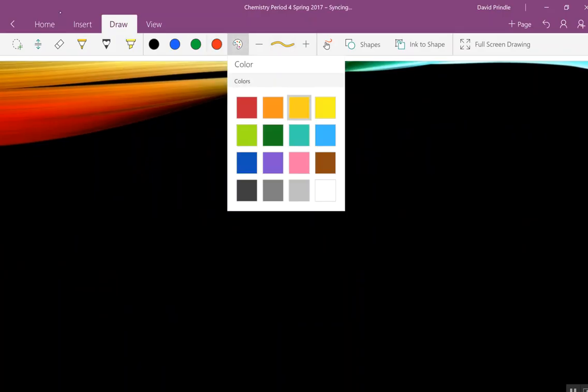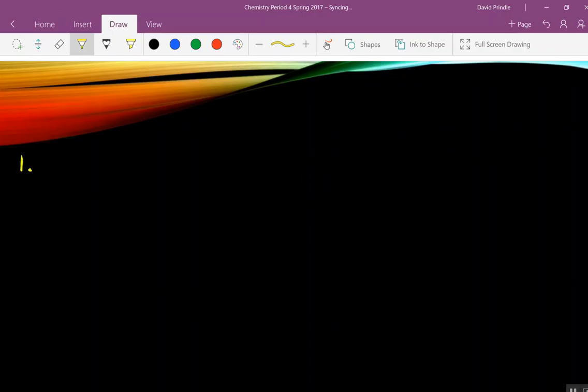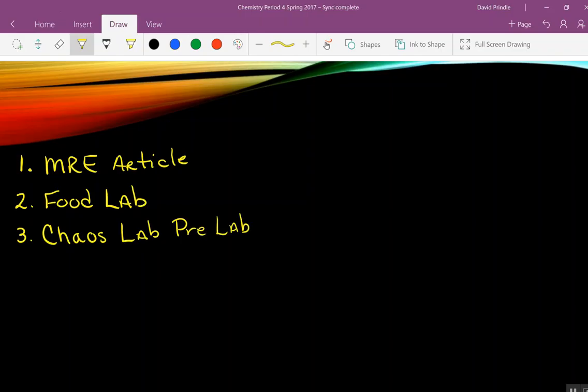Here's what I want you to do for tomorrow. Number one, your homework. Do the MRE article. Ten minutes. Number two, food lab. Turn in by morning. Number three, chaos lab. Pre-lab. And that will post in a few minutes. And number four, attempt problems two through seven on the homework.